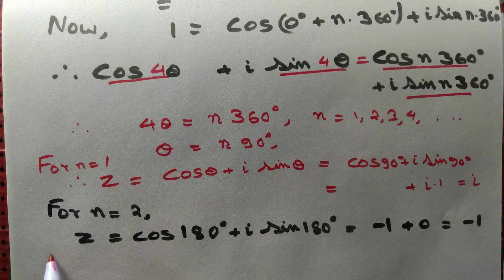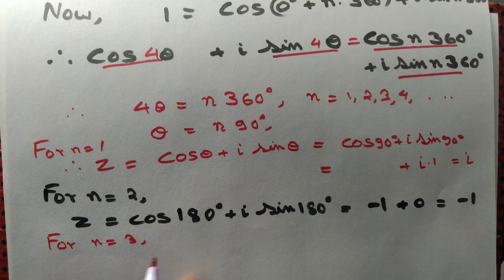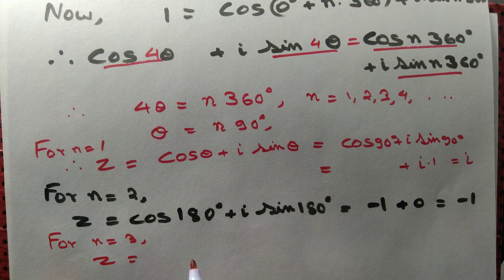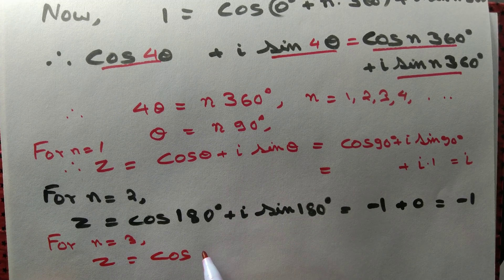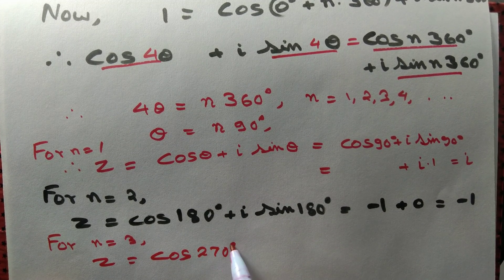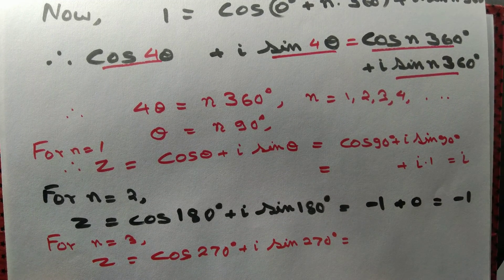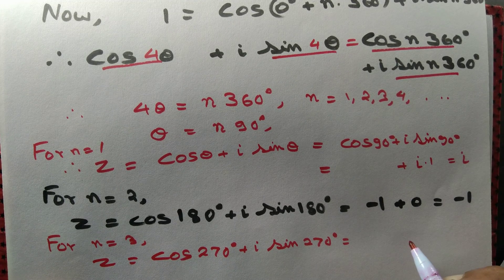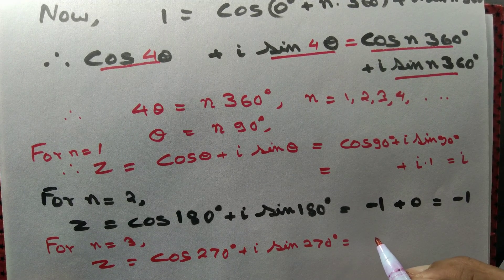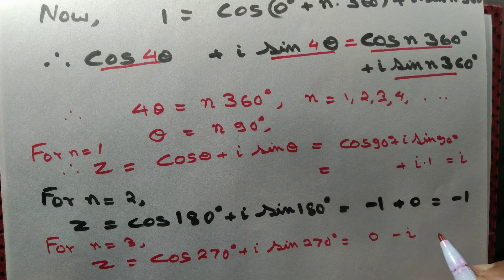For n equal to 3: z equals cos(3 × 90°) + i sin(3 × 90°), that is cos270° + i sin270°. It is in the third quadrant: cos270° equals 0, and sin270° equals −sin90° which is −1, so z equals −i.